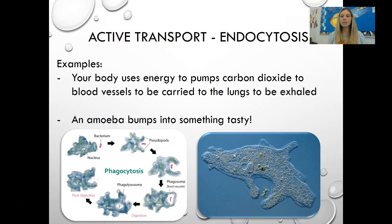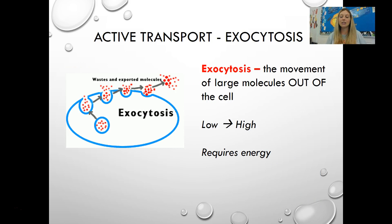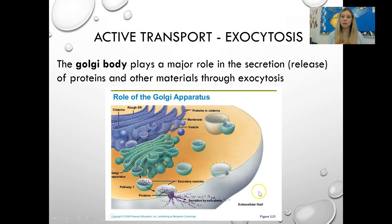An example of endocytosis would be moving carbon dioxide to blood vessels where carbon dioxide is already high, getting them to the lungs to exhale, or an amoeba taking in something tasty — it takes some energy to do it. Exocytosis is the opposite: the movement of large molecules out of the cell. Moving from low to high, this is typically how cells move waste. It requires energy, and the Golgi body plays a major role. The Golgi body pinches off membrane to form temporary vesicles, brings them to the cell membrane, which then flexes and releases the contents into the outside environment. It does take energy — it's moving from low to high, so it is active transport.